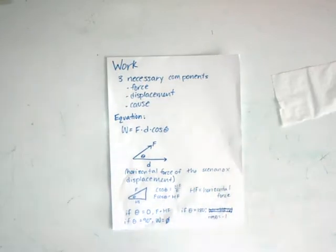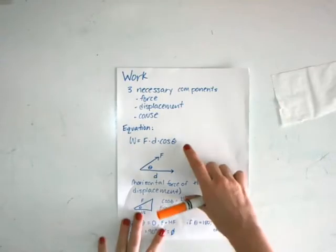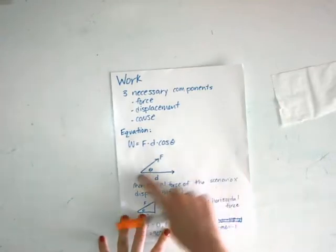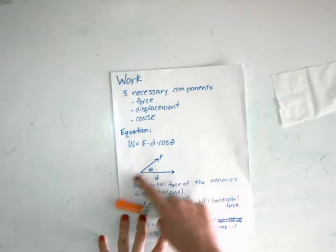is work is equal to force times displacement times the cosine of theta. W = F·d·cos(θ). Theta is the angle between the force and the displacement. So if we see in this diagram that the force is being pulled here, say...